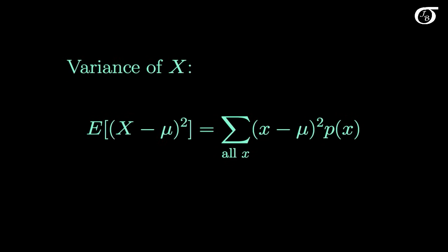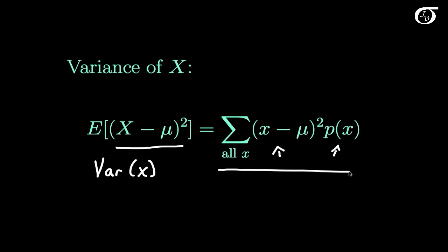One important quantity for us is the variance of X, which is the expectation of (X minus mu) squared. This is the average squared distance from the mean, and we call that the variance of X. To find it, we evaluate that function at every possible value of x, multiply those by their probabilities of occurring, and add it up over all x. This variance of X is again a parameter and not a statistic — it is based on the real probability distribution. We sometimes represent the variance of a probability distribution by the symbol sigma squared.